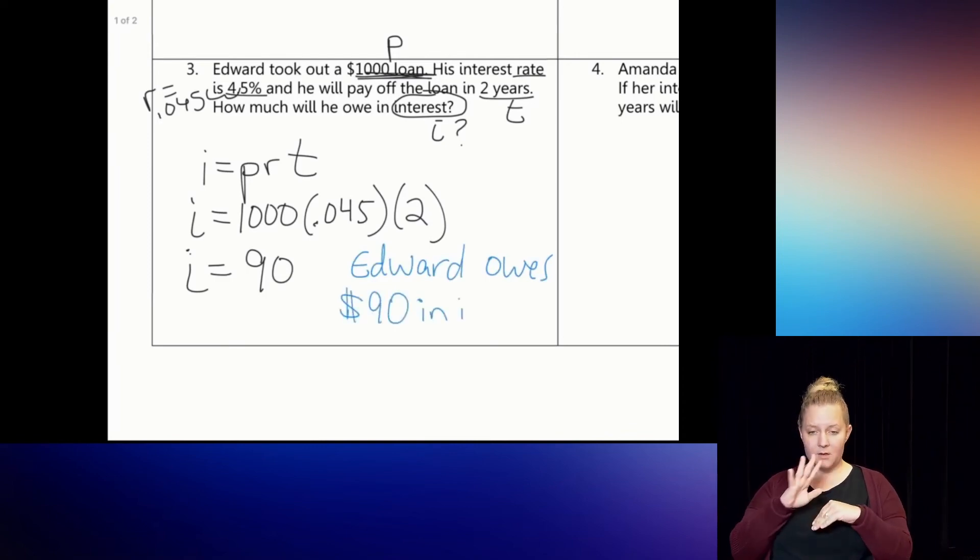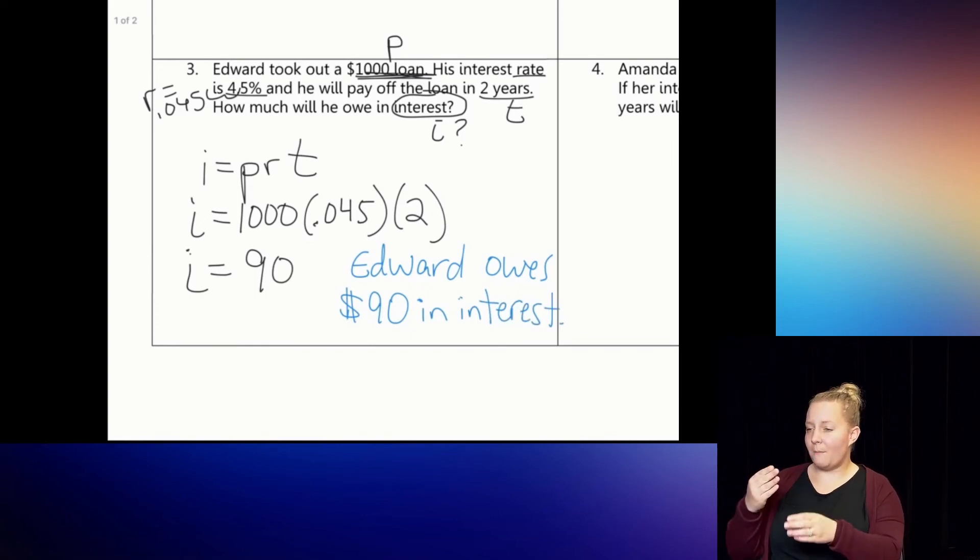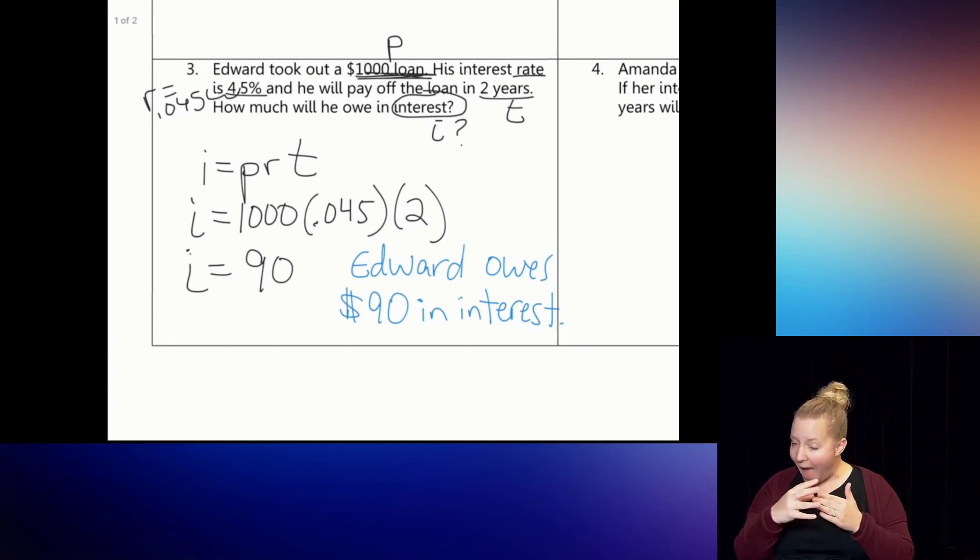Up above we talked about earning interest, where if you leave money in the bank and you allow the bank to use your money and give it in loans to other customers, then they give you a thank you by paying you interest. But if they loan you money and let you use their money for a while to buy a car or to buy a house or pay for college or something like that, then not only do you pay them back all the money you borrowed, so in this case Edward will pay them back $1,000, and he'll pay them as an extra $90 as a reward to them for loaning him their money. So then altogether he has to pay them back $1,090.